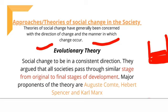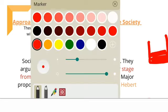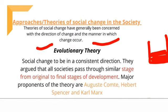Evolution se hum kya samajhte hain? For example, aaj se 10 saal pehle mobile phone kis tarike ka tha? Pehle aap sirf call kar sakte the. Lekin aaj itne advance features hain ki aap bank connect kar sakte hain, food order kar sakte hain, shopping kar sakte hain — bhoat saari cheezein aap us phone ke zariye kar sakte hain. Yahi hai evolution of an object.